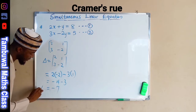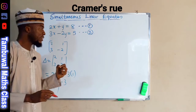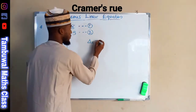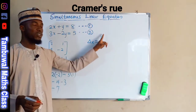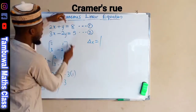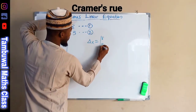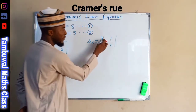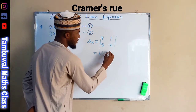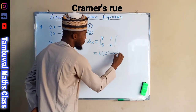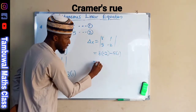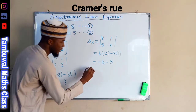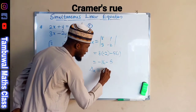That gives us negative 4 minus 3, which equals negative 7. This is our main determinant. The third step is to find the determinant with respect to X. We substitute the X column with our constants, which are 8 and 5, keeping the Y column as 1 and negative 2. This gives us 8 times negative 2 minus 5 times 1, which is negative 16 minus 5, so the determinant with respect to X is negative 21.